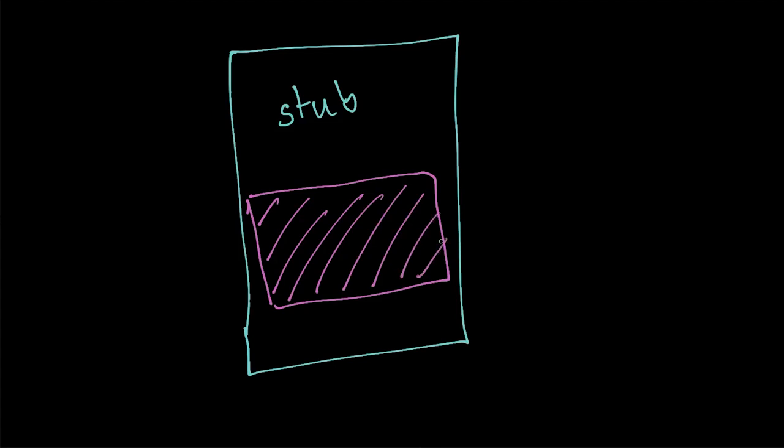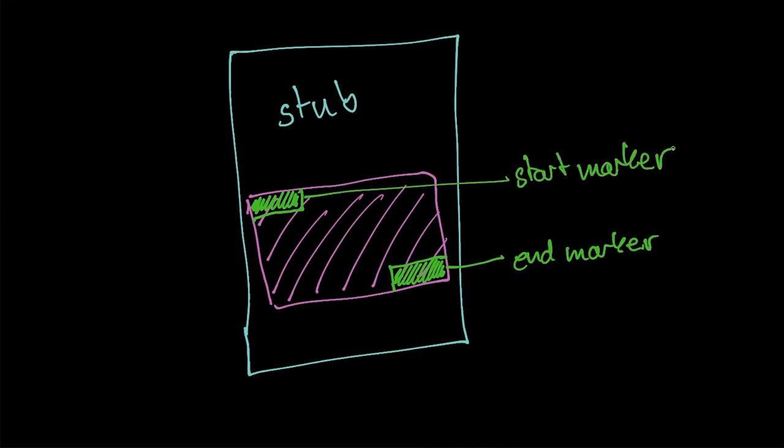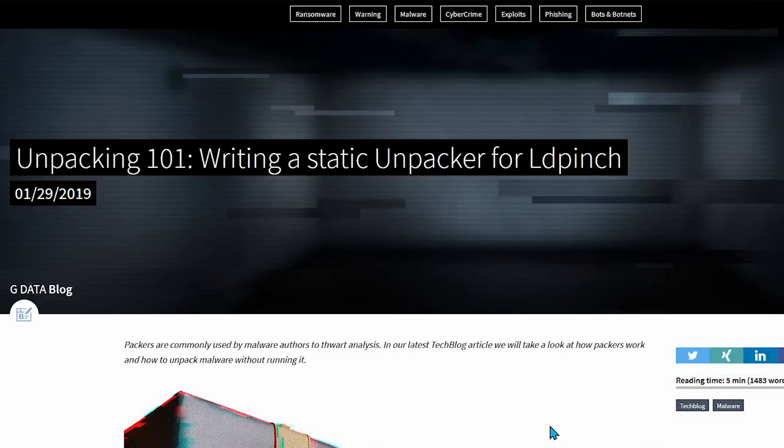I'd like to add some more useful details about packed files here. How does a stub know where the encrypted content is located? A very common thing that you may encounter is the use of start and end markers. Such markers can be very useful for detection patterns. Because the encrypted part must be decrypted, you will also find the decryption keys somewhere inside the binary or a key generation function. Both might be useful for writing static unpackers.